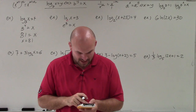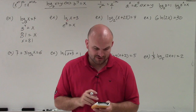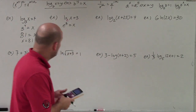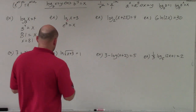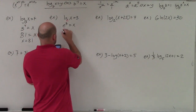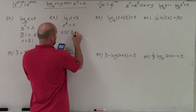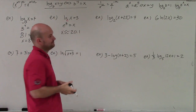In my calculator, I'll do second, natural log, which gives me e raised to a power, and I'll type in 3. I get approximately — rounding to the nearest tenth — 20.1.